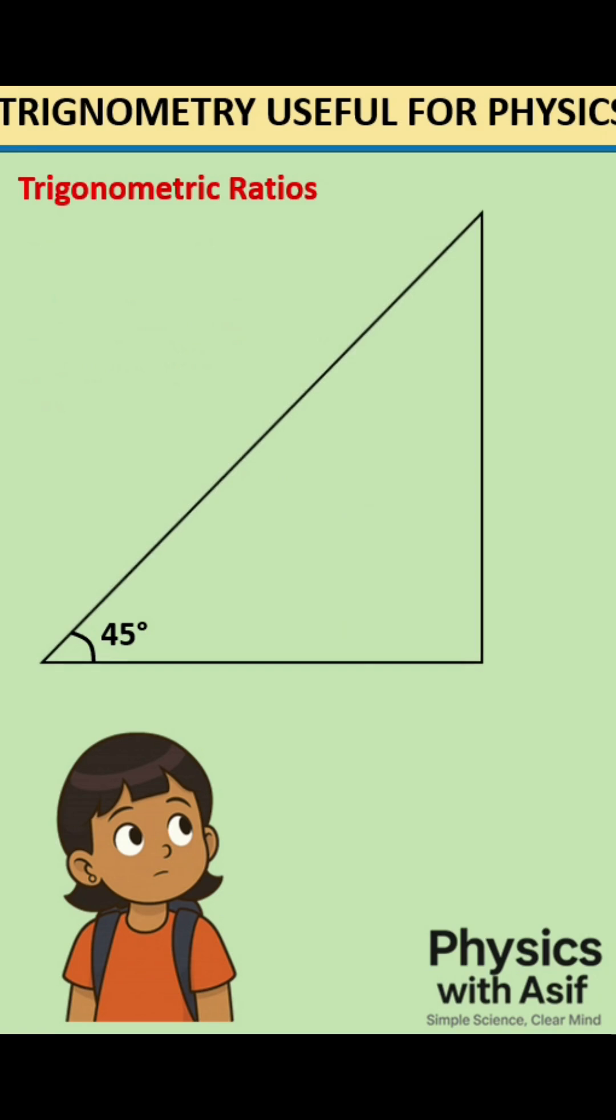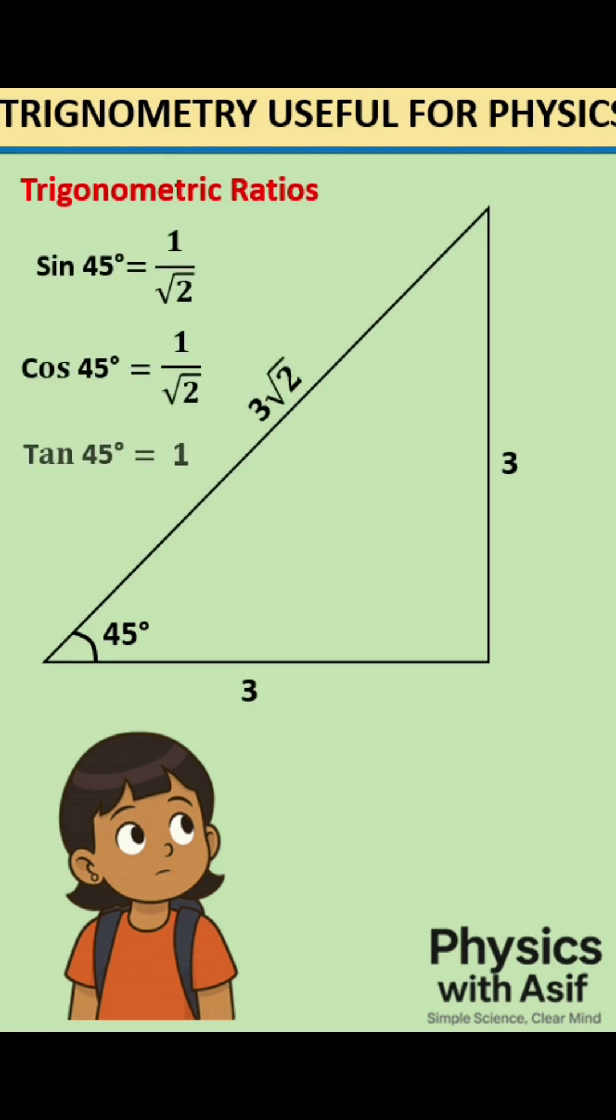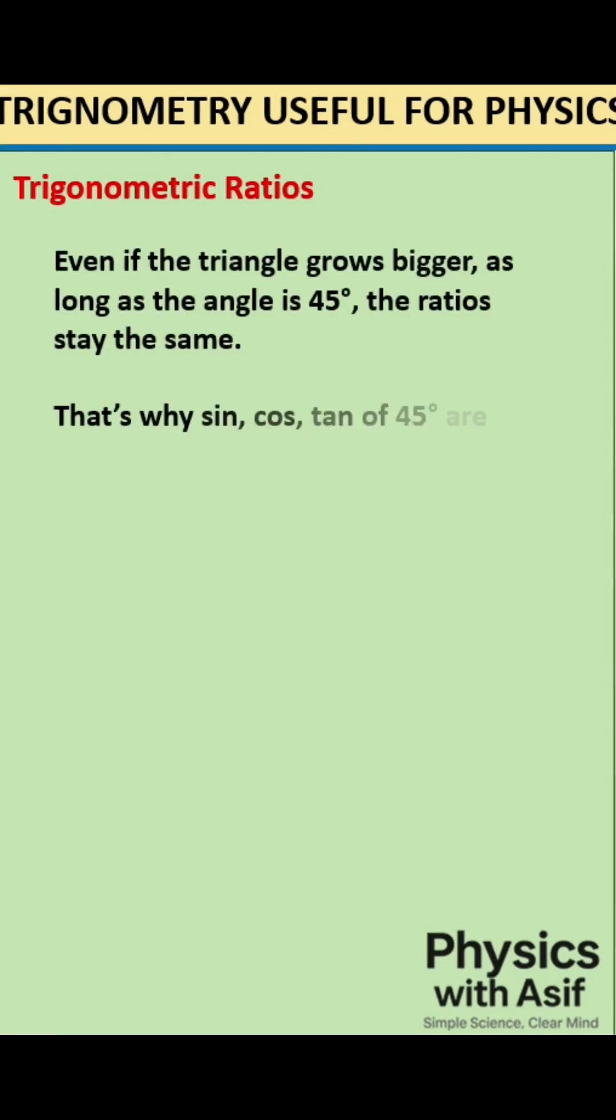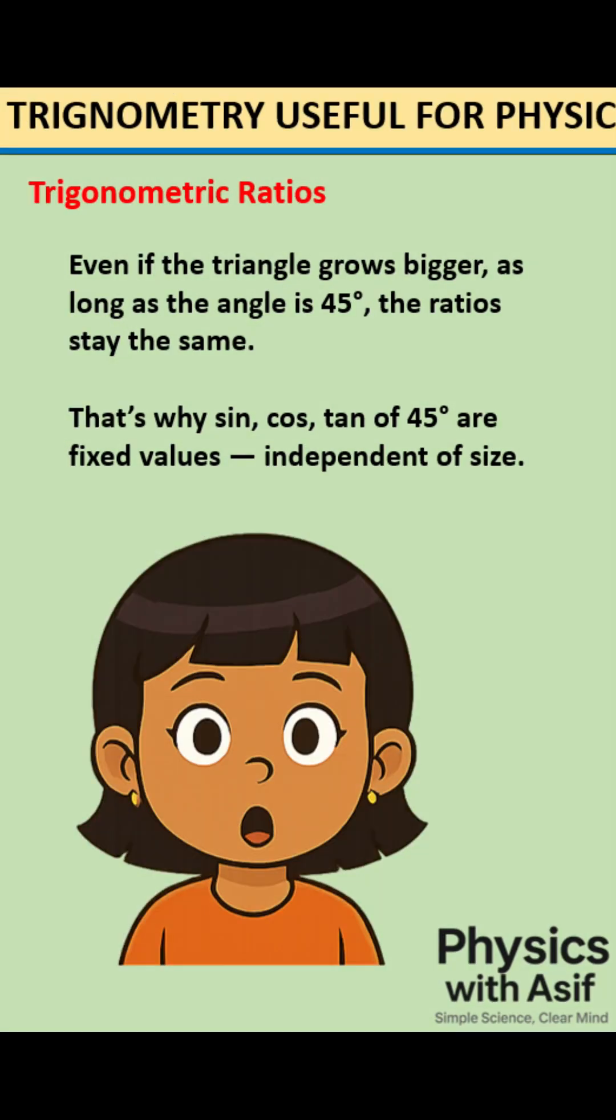Triple the size of the triangle, and still we get the same values. Even if the triangle grows bigger, as long as the angle is 45 degrees, the ratios stay the same. That's why sin, cos, tan of 45 degrees are fixed values, independent of size.